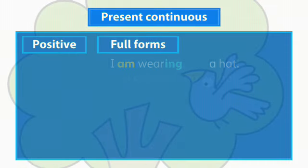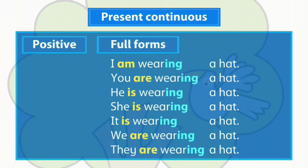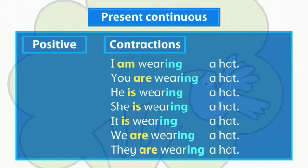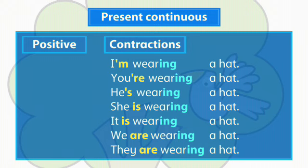We form the present continuous positive like this. The present continuous positive has full forms and contractions of the verb be. We usually use contractions in conversations.